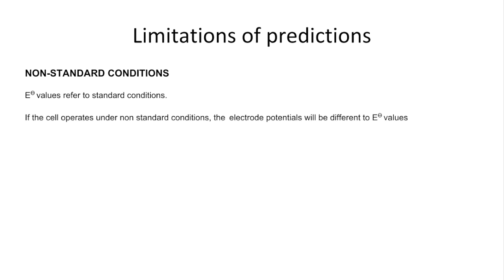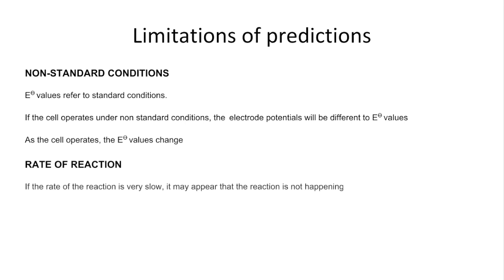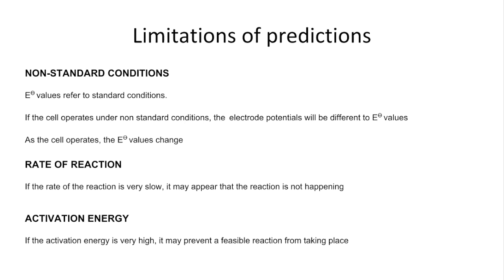Finally, there are limitations to these predictions. Standard electrode potentials apply only to standard conditions, so operating under non-standard conditions gives different electrode potential values. As a cell operates, solution concentrations change from the standard one mole per decimetre cubed, altering the voltages. Rate of reaction may also be very slow, making a feasible reaction appear not to occur, and a high activation energy can also prevent a thermodynamically feasible reaction from taking place.